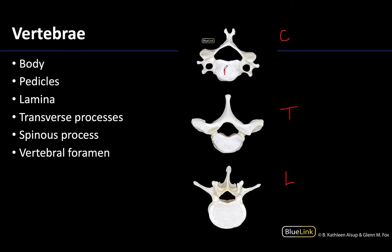The large anterior bodies are going to be one of the largest structures associated with the vertebrae. You can see how very large they are in the lumbar vertebrae. They look almost heart-shaped in many of the thoracic vertebrae. They're going to be relatively large for the cervical as well, even though overall these are smaller vertebrae. Extending from the body, you'll have these short extensions called the pedicles.